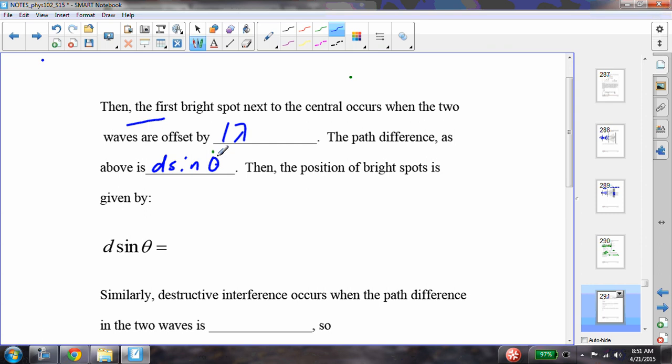At the central spot, I have zero wavelengths difference. At the first spot, I have one wavelength difference in the path length. At the second spot, I have two wavelengths difference, three, four, and five, and on and on. So I get d sine theta equals m times lambda.